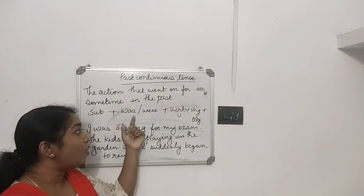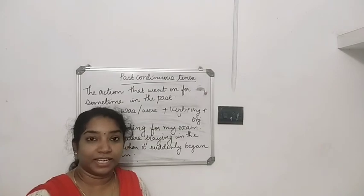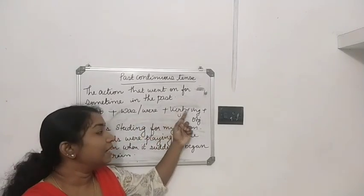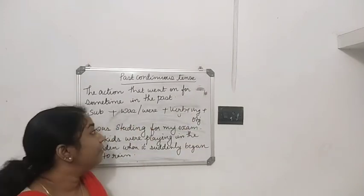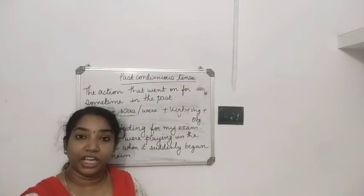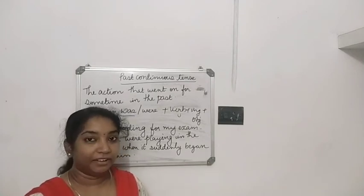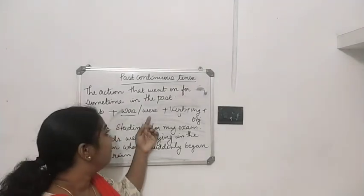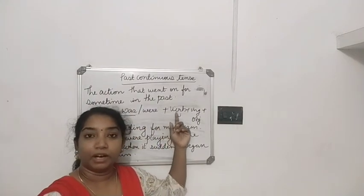The rule for past continuous tense is: Subject plus was or were, plus verb plus ING. I told you in the past tense we have to use was or were. Where do we have to use 'was'? Was is used with he, she, or it and with singular forms. And with you, we, they, and plural forms, we have to use 'were.'